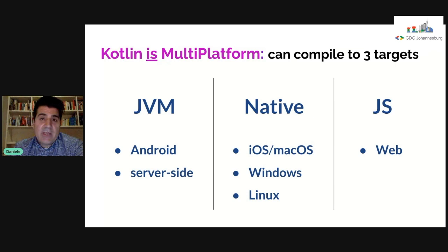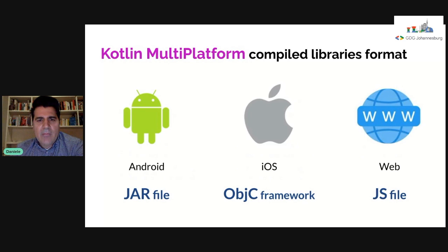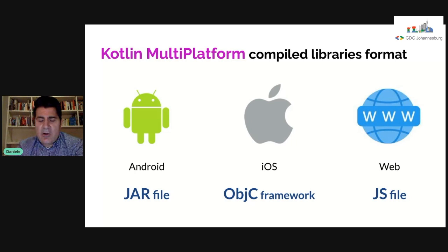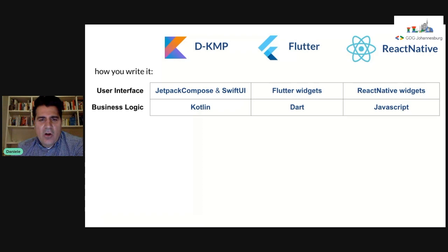There's going to be a fourth compilation target, possibly in 2022, which is WebAssembly. All the business logic code written in Kotlin Multiplatform is compiled to a library. For Android it compiles as a JAR file — totally native. For iOS it compiles as an Objective-C framework — also fully native. For the web it compiles as a JavaScript library.